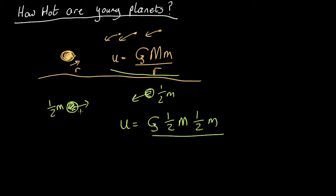Let's say bring it into the radius of the final planet. It'll actually be a bit less than that, so this is an underestimate of how much energy you're going to get. So that equals G M squared over 4r.